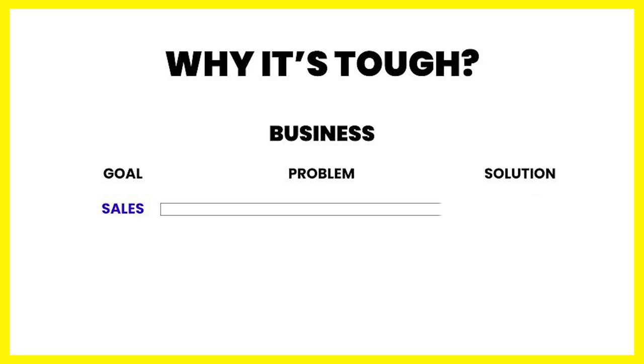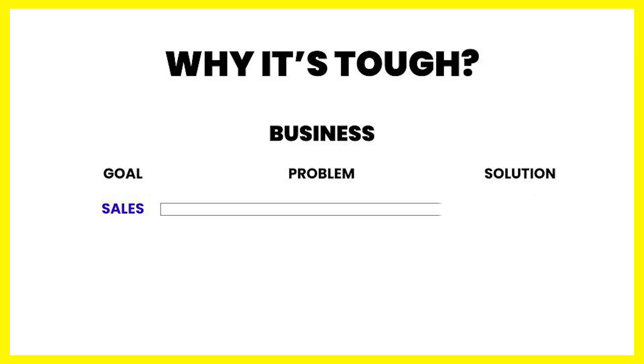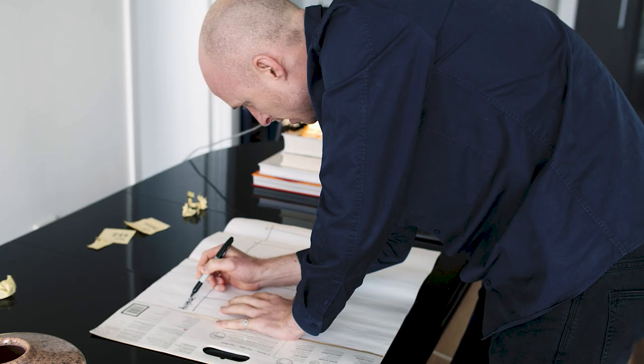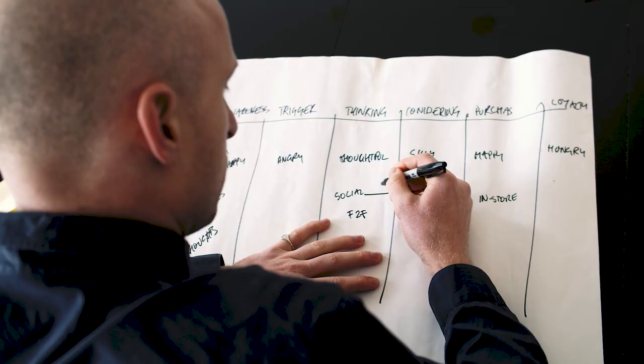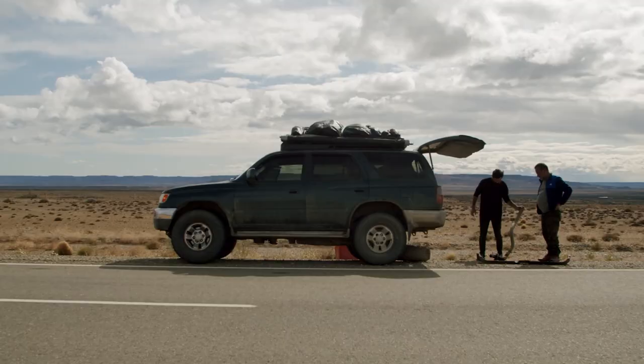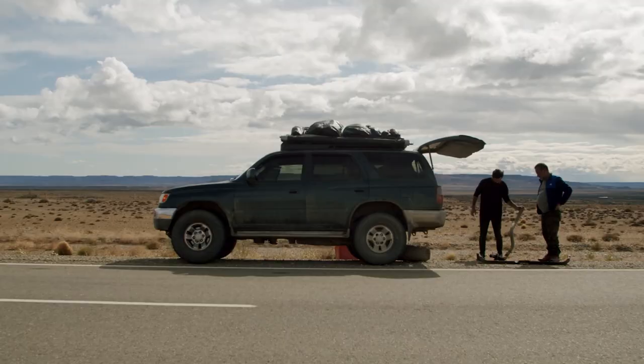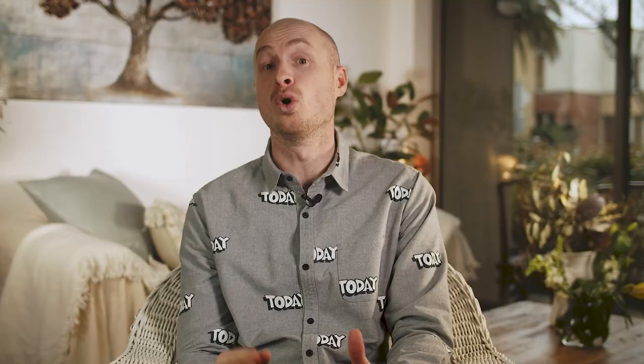With a marketing strategy, the thing that makes it unique versus other types of business strategy is that we're trying to align two interest groups. We're trying to come up with a solution that will drive a result for the business and also drive a result for the consumers. As important as the business problems are to you, for the consumer who's buying your product, they really don't care about the problems of your business — all they care about is solving their own problems.